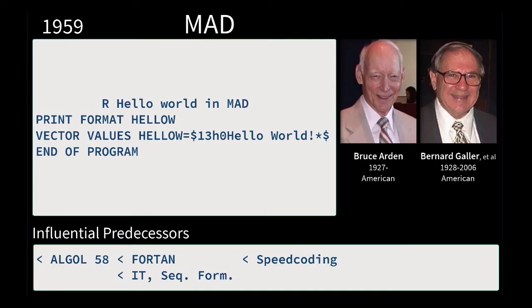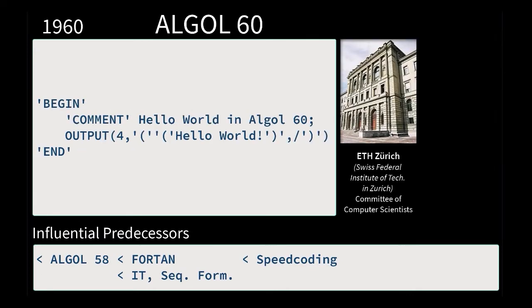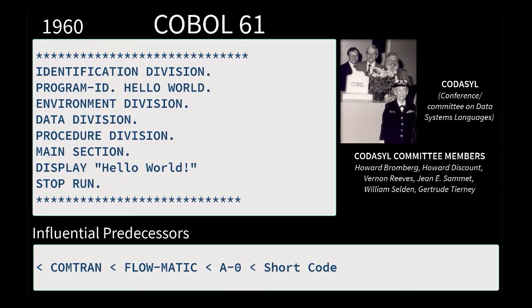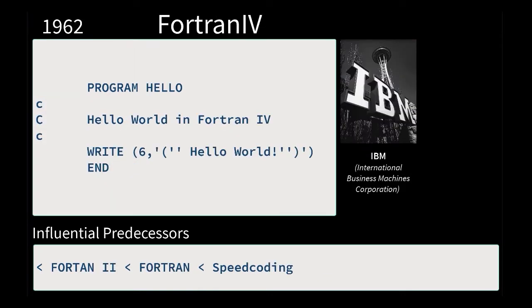You can start to see on the bottom this track of different languages that are being influenced by previous languages, and they often go back to a lot of the same predecessors. A lot of these also have multiple versions — so now we see another version of Fortran, we saw another version of COBOL already, and multiple versions of Algol are being credited.